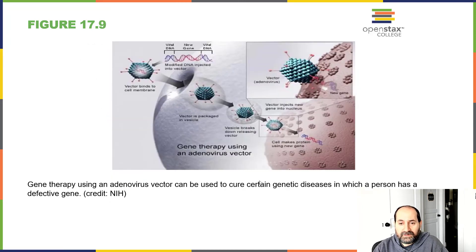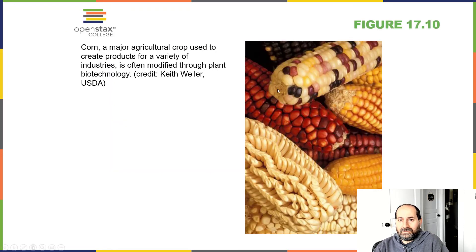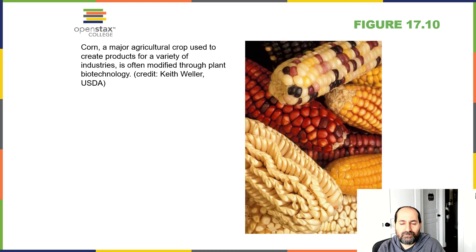Another thing that's hot right now in biotechnology is gene therapy. What we can do is take modified genes, put them inside of viruses, and then inject the viruses into the patient. The viruses will infect the patient's cells and deliver the modified genes. We can also genetically modify organisms — have you heard of GMOs? These are genetically modified organisms. These crops can grow in drought conditions, may be more resistant to pests, and can have features that make them easier to grow in different climates and environments.